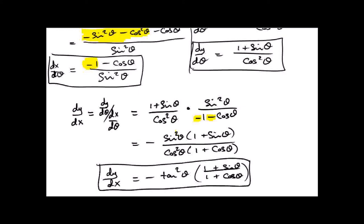Anything anybody wants to ask? Parametric differentiation — people get kind of afraid of it but it is very straightforward. You just get dy d-theta or dy dt, get dx d-theta or dx dt, then dy goes on top, dx goes on the bottom, flip the bottom, multiply and you get your answer. The answer is extremely predictable in these questions.